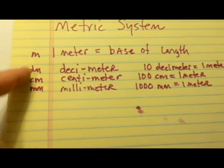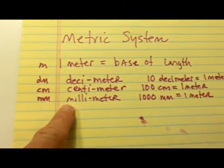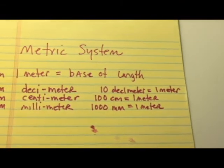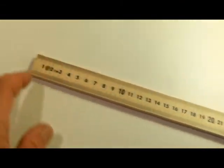Now these three, deci, centi, and milli represents units smaller than a meter. We can also take this one meter stick and we can collect more of them together.